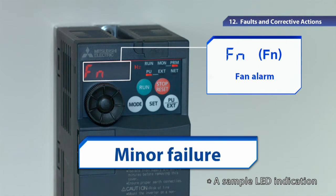Next, the minor failure. Although the inverter does not trip even if an alarm is displayed, prompt actions are required. Failure to do so may lead to a major fault. The alarm signal output can be set in the parameter.